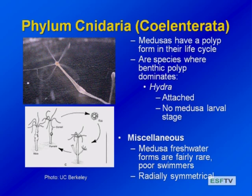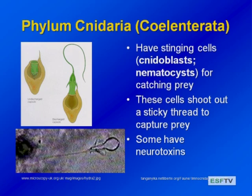Like all cnidarians, they're radially symmetrical. They catch their prey through specialized cells, especially nematocysts or harpoon-like structures that, when triggered by motion of the prey, launch a harpoon into the prey. Many of them have neurotoxins; some have sticky cells. So they're able to capture, disable, and consume their zooplankton or larval fish prey.